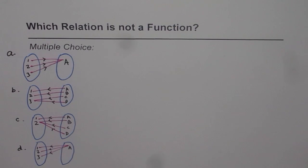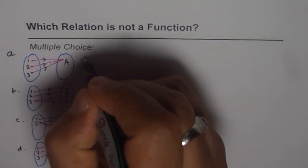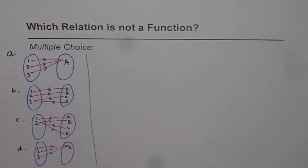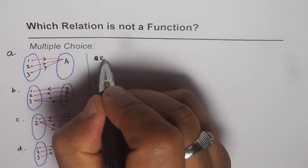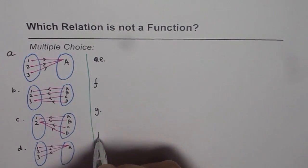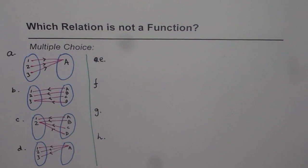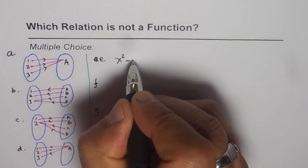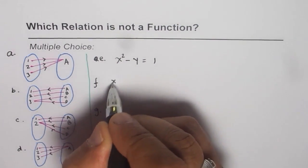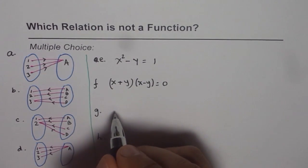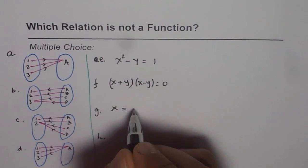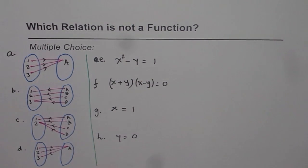Now let's do another set of relations using equations. I'll give you four equations. The first one is x² minus y equals 1. The second one is (x + y)(x − y) equals 0. Then we have x equals 1, and finally y equals 0. You have to figure out which one of these is not a function.